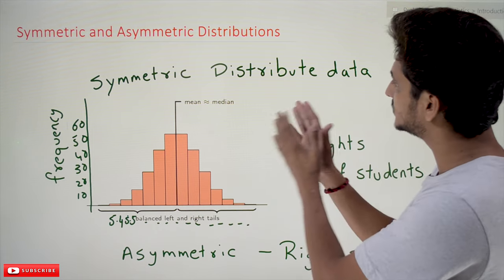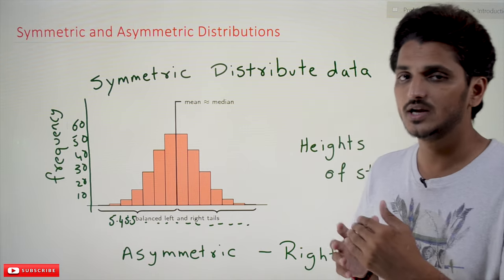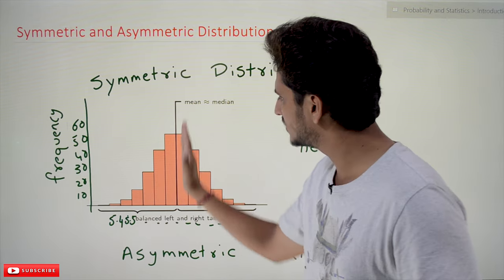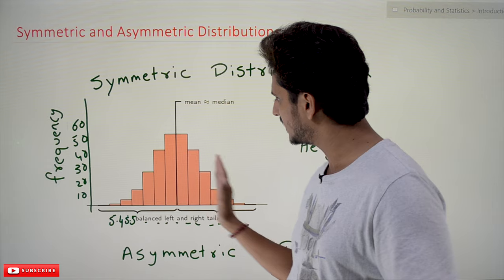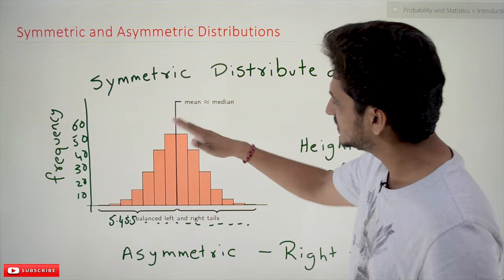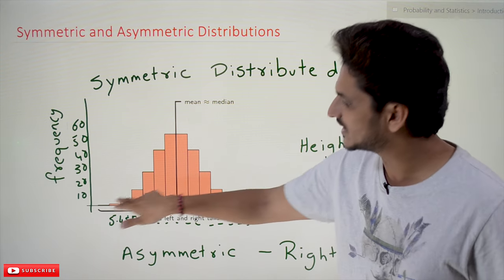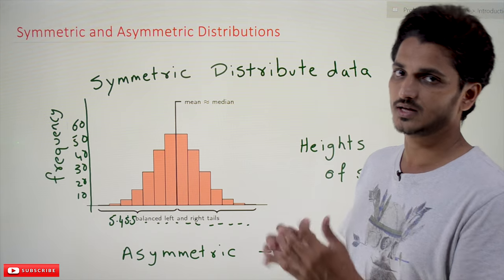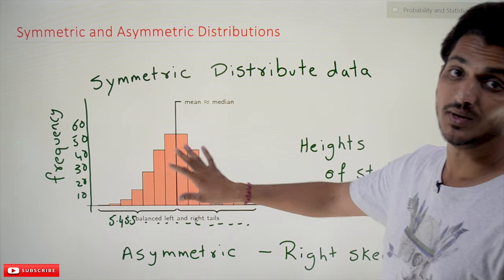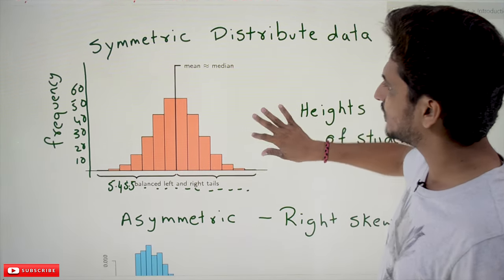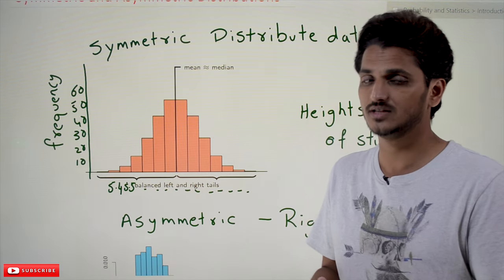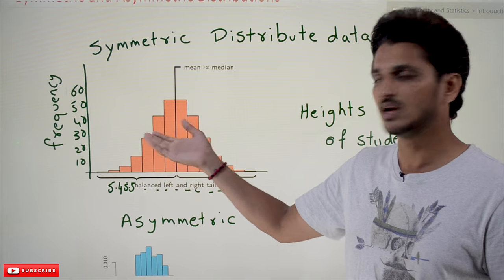Why do we call this a symmetric distribution? If you calculate the mean for this data, you get a central value, and on the left-hand side and the right-hand side the distribution looks similar — almost the same shape. That's why we call it a symmetric distribution. For symmetric distributed data, the best way to calculate central tendency is the mean value.